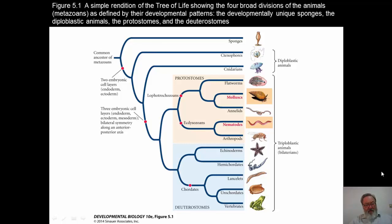If we look at the first slide, we can see that there is a division of the various kinds of metazoans, the various animals. We should just take a few minutes to quickly go through this rather simple rendition of the tree of life. You can see that there are four broad divisions of the animals as defined by their developmental patterns: the developmentally unique sponges, the diploblastic animals, the protostomes, and the deuterostomes.